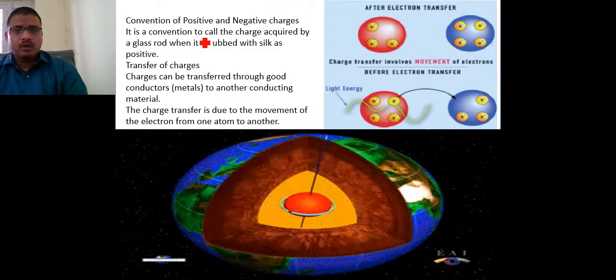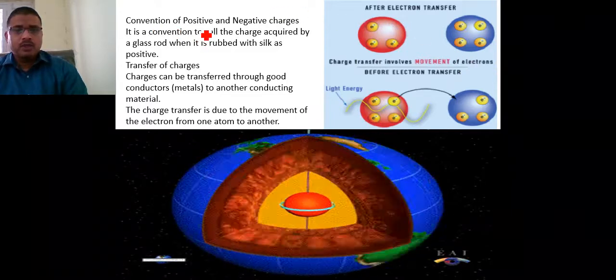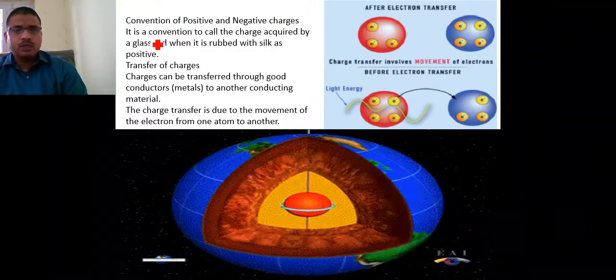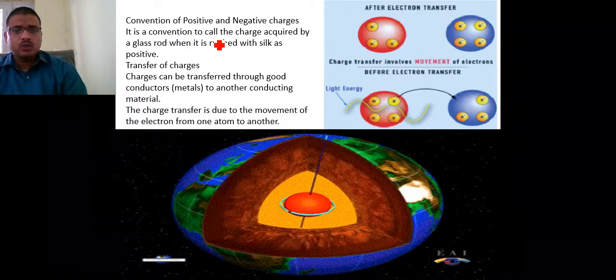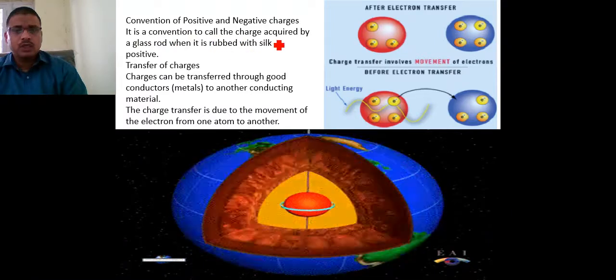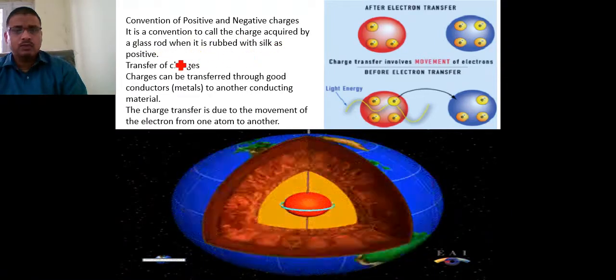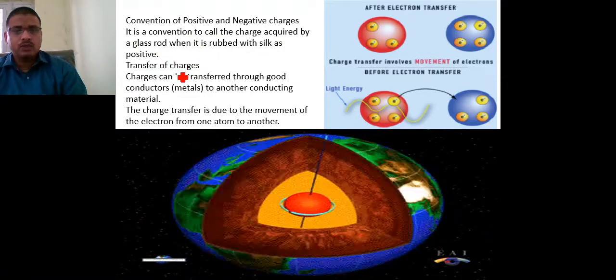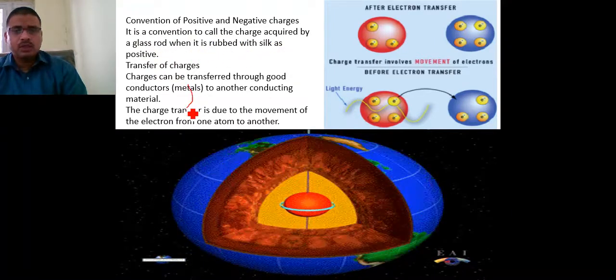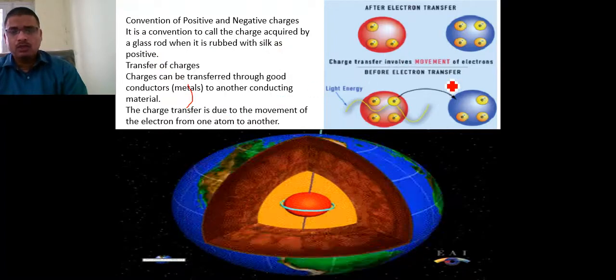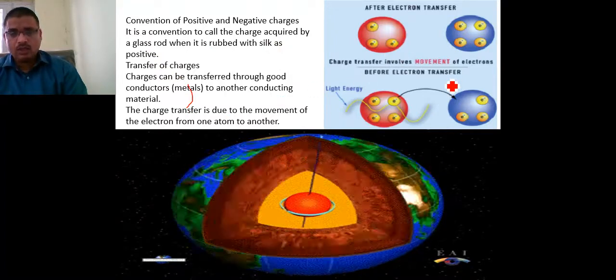By convention, the charge acquired by a glass rod rubbed with silk cloth is called positive charge. This convention has already been discussed in terms of how charges are created and identified.